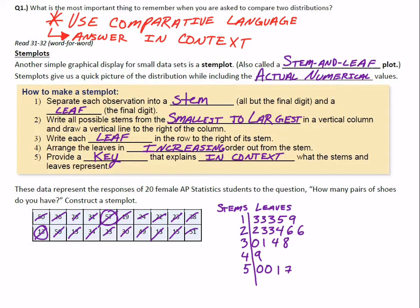Every single person in the data set has a leaf corresponding to a stem in our graph. One thing we don't have yet, though, is critical: kids often forget this—we need a key. All you have to do is use one example. Pick your favorite one.